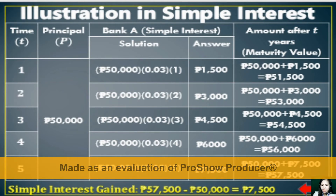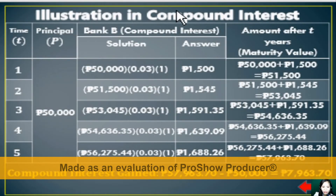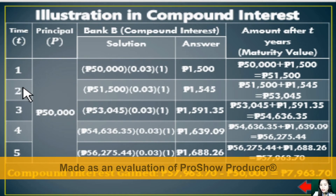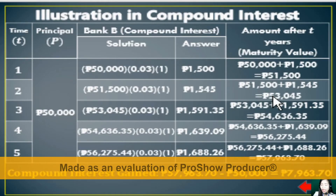Now let's calculate the interest gain for Bank B using compound interest. In Year 1, the principal of 50,000 pesos multiplied by 0.03 times 1 year gives an interest gain of 1,500 pesos, with a maturity value of 51,500 pesos. In Year 2, the new principal is based on the previous year's maturity value, giving a compound interest of 1,545 pesos and a maturity value of 53,045 pesos.